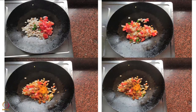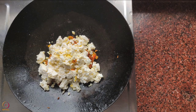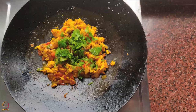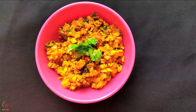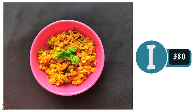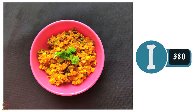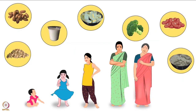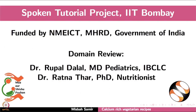Add chopped tomatoes, green chilli, salt, and spices. Crumble the paneer and add to the pan. Mix well and cook for 2–3 minutes. Garnish with coriander leaves. Scrambled paneer is ready. One serving gives around 380 mg of calcium. All these recipes are rich in calcium, and it is necessary to include calcium in our daily diet for good health.